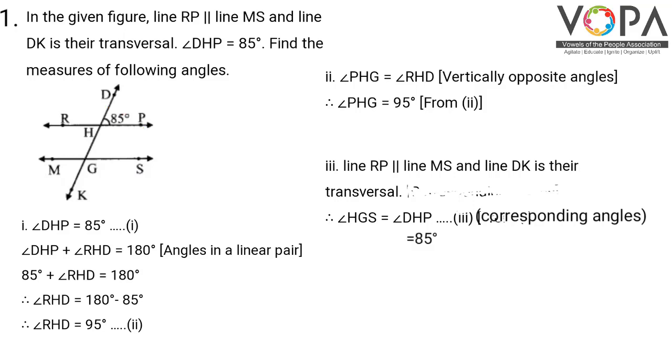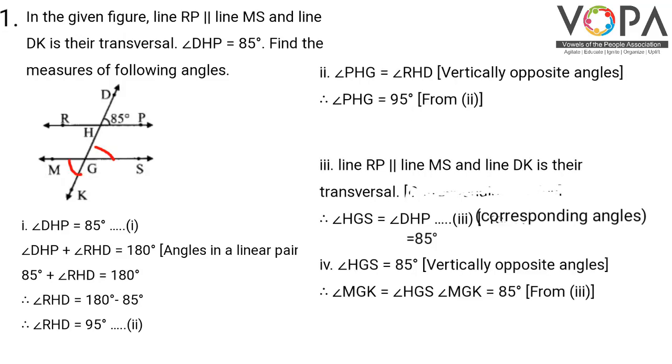Angle HGS is vertically opposite to angle MGK. Hence, angle MGK is also 85 degrees.